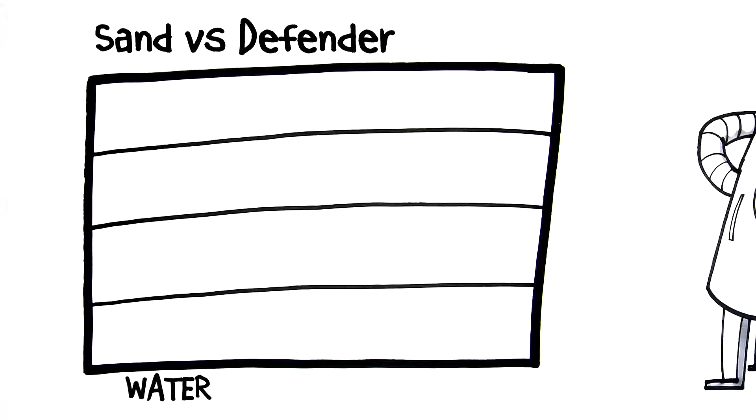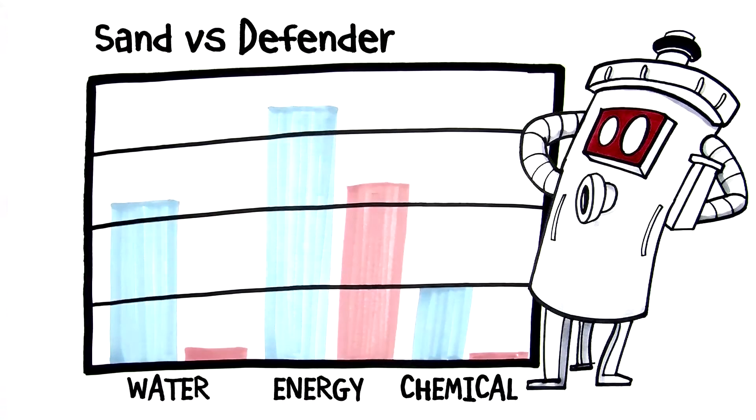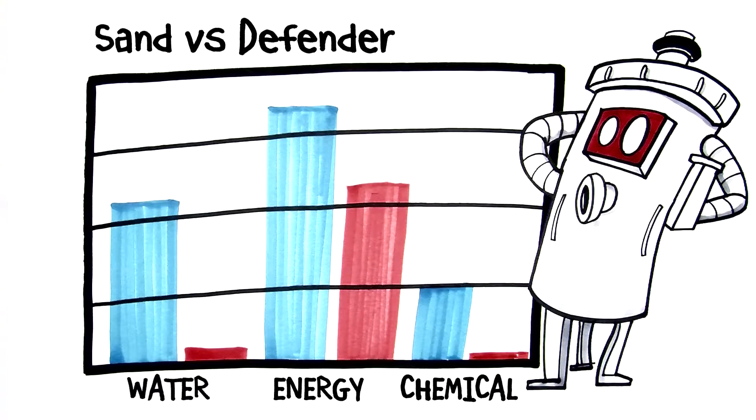The combination of water, energy and chemical savings really adds up. In this example, annual operating costs for a pool with a sand filter are more than 2.5 times the cost of using Defender.